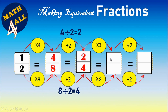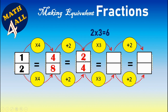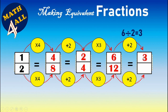For the third example, multiply by three: two times three equals six, four times three equals twelve. Then to reduce this fraction, divide by two: six divided by two equals three, and twelve divided by two equals six. So the rule is: whatever you do on the top, you have to do on the bottom to get equivalent fractions.